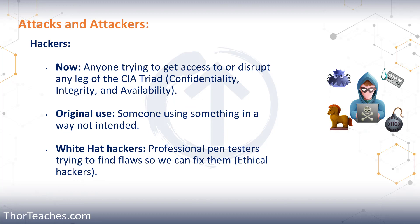Let's recap. In this lecture we talked about hackers — they used to be someone who found unique ways of using something for unintended purposes, but now the term refers more to someone trying to gain access to or disrupt elements of the CIA triad: confidentiality, integrity, and availability. Hackers range from white hat to black hat.